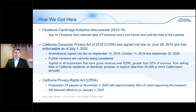The threshold for which this applies to businesses currently exists at: over $25 million in gross revenue; greater than 50% of revenue coming from the sale of California residents' information; or distributing, processing, or receiving data from more than 50,000 Californians annually. As of November 3rd, the California Privacy Rights Act was passed as Proposition 24 with approximately 56% of voters approving. It becomes effective January 1st, 2023, and we expect similar legislation in 2021 with further amendments in subsequent years.